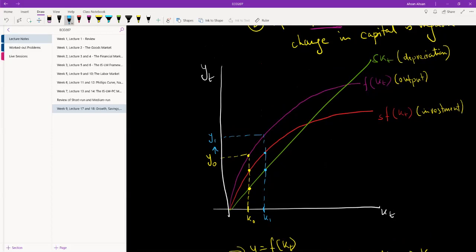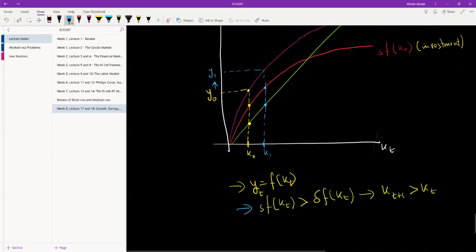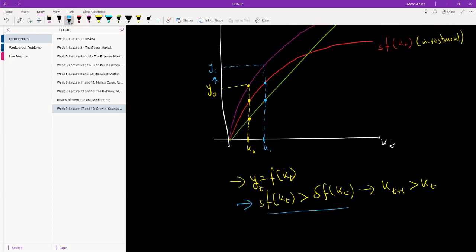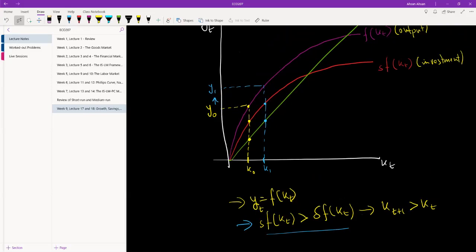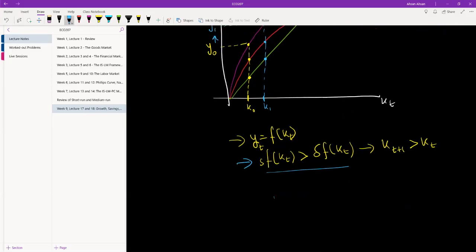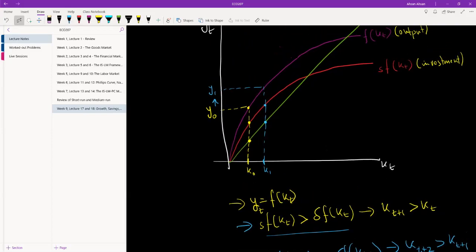We also know that this has been our investment. And this has been our depreciation. Once again, we have a scenario where our depreciation is less than our investment. So what we have once again is investment at t plus one is higher than delta times kt plus one. As a result, what we can say is that capital per worker in period t plus two is going to be higher than capital per worker at t plus one.